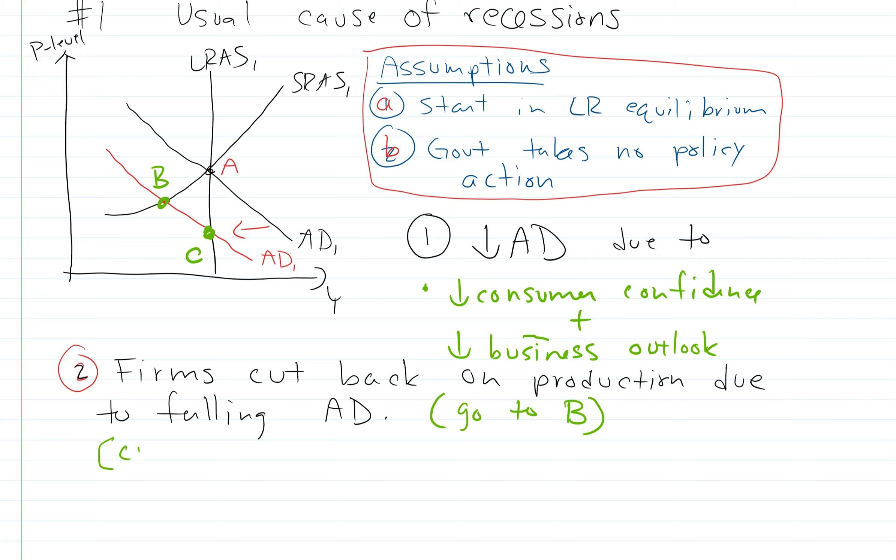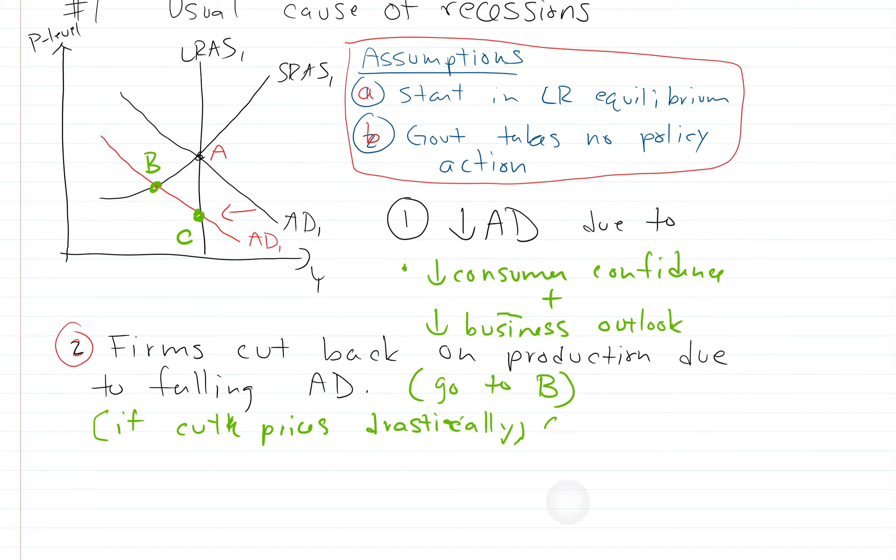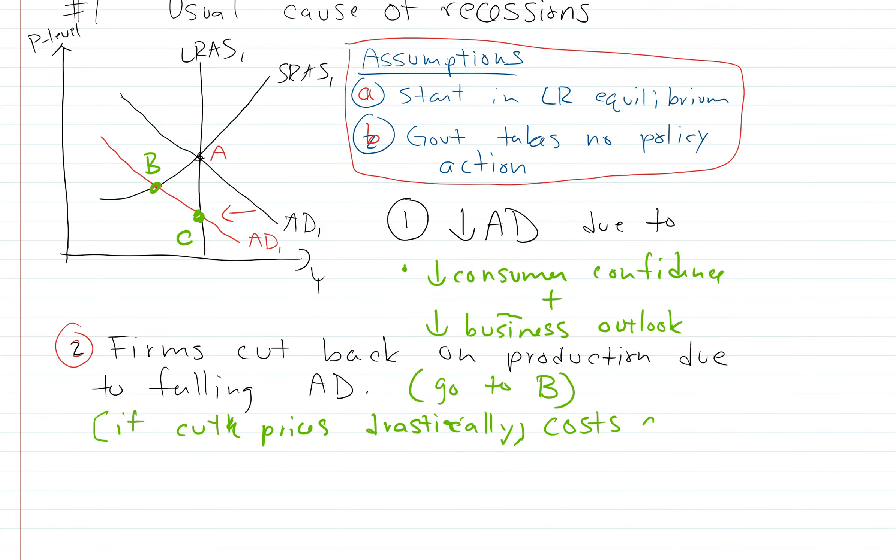And the idea again is, if they cut prices drastically, let's say down to C, the costs don't go down. So then our costs are sticky, and so we end up with falling profits. So they don't want to do that. Instead, they just cut back on production, which is what we've shown here.